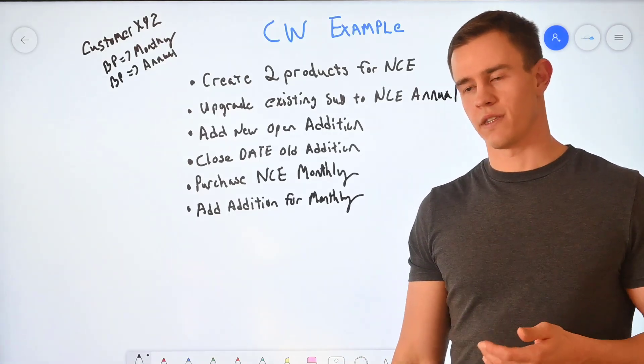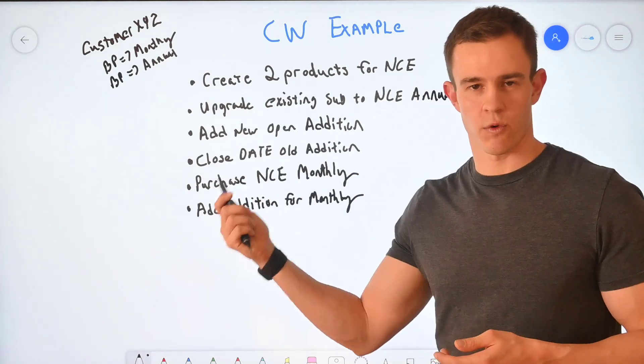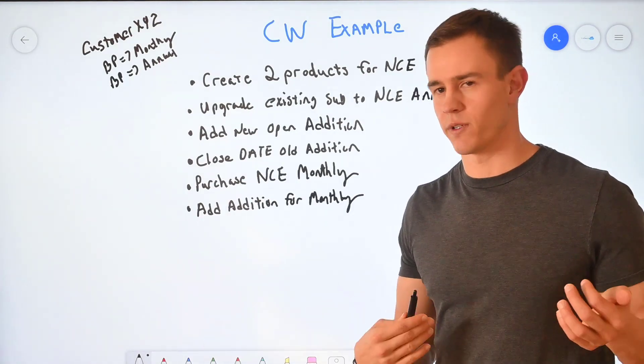You're going to close date that old edition there. If you're having a new contract, obviously you don't have to worry about that. You're just canceling that contract and writing these over net new.